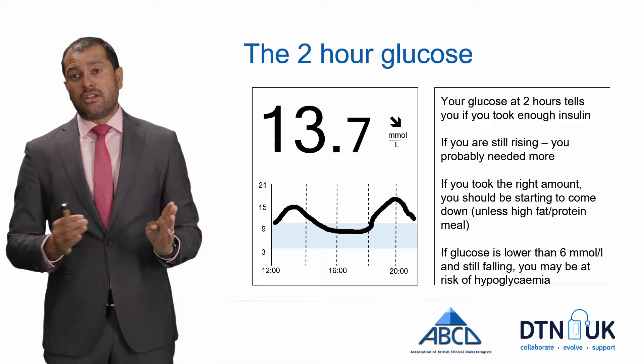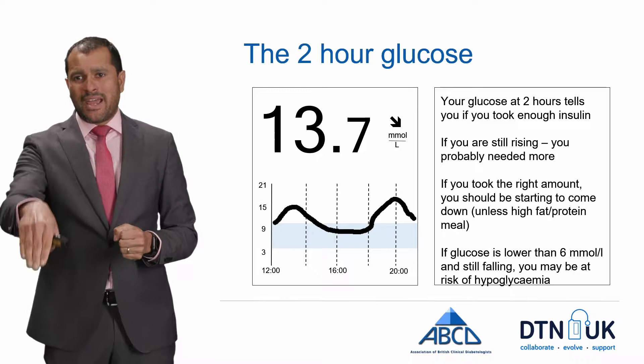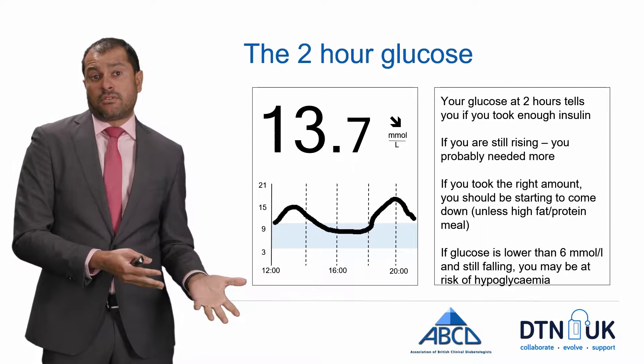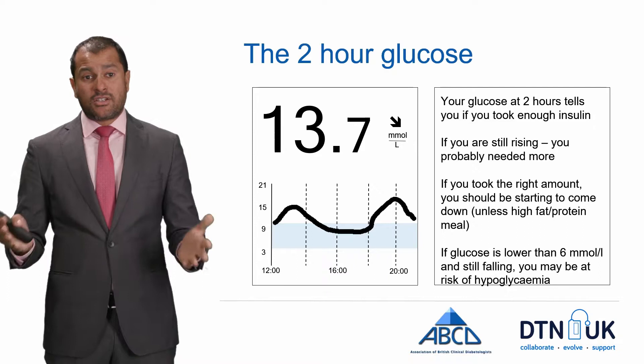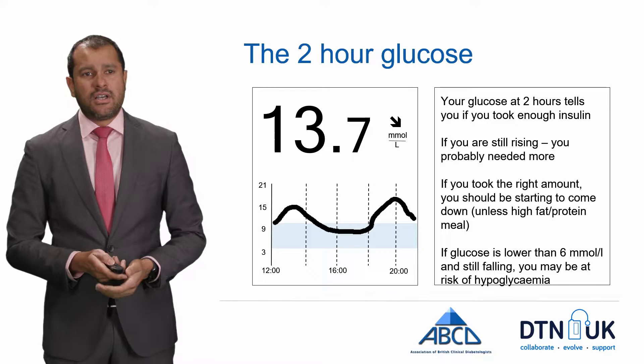At two hours after a meal, your blood sugar should generally be falling. If you took the right amount of insulin, you should be coming back down into range. If you're still rising at two hours, you may have underestimated the dose. If your blood sugar is already below 6 at two hours, you're going to be at risk of hypoglycaemia and you might want to take some preventive carbs.